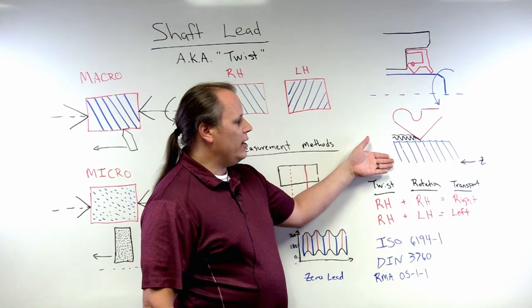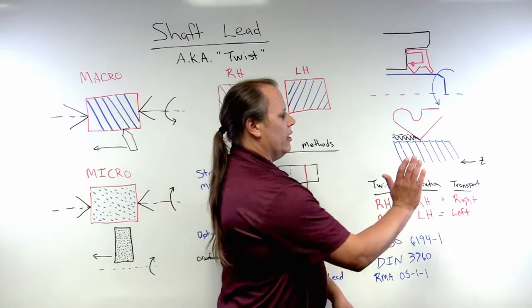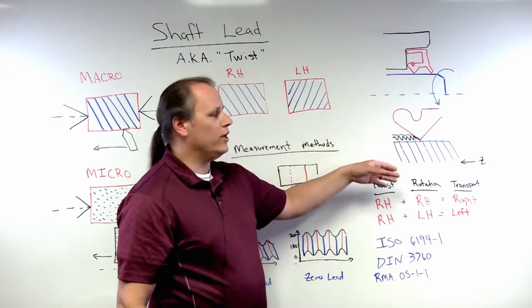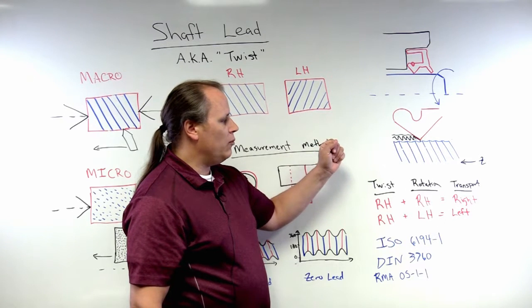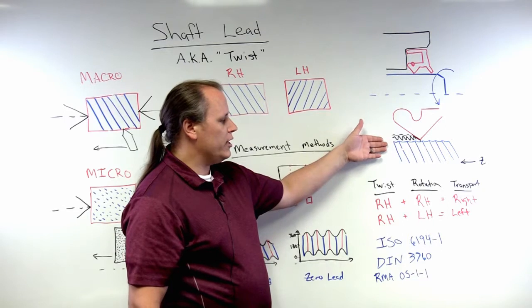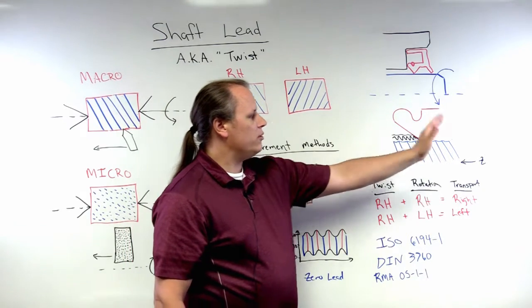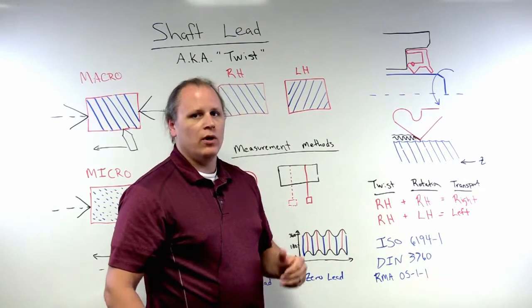it will actually transport oil from left to right or right to left. Because this is right-hand twist, if we have a right-hand rotation, so the top of the shaft moving towards the board, we will actually end up with movement of the oil, transport of the oil from left to right. So in this case, out of the sealed system, resulting in leakage.